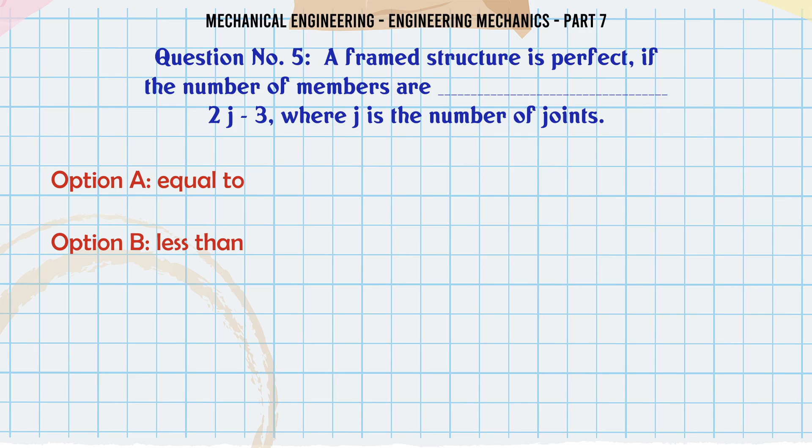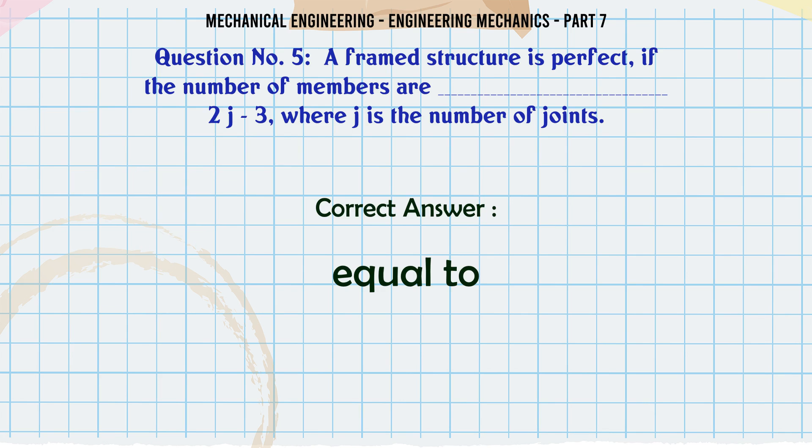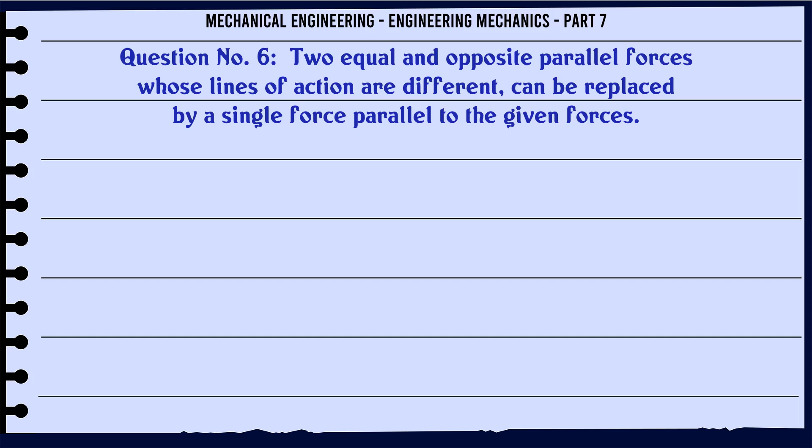A framed structure is perfect if the number of members are 2j-3, where j is the number of joints. Option A: Equal to, Option B: Less than, Option C: Greater than, Option D: Either B or C. The correct answer is Equal to.